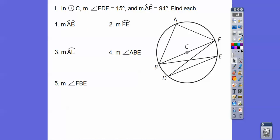Let's do the same with this one, a bunch of inscribed angles. Let's put in those numbers right there. So this angle is 15, and this arc is 94. Angle EDF is 15, and arc AF is 94. If that's 15, that's 30. If that's 94, this is going to be 47 over here. I got a diameter right there. So this is a right angle right there because it's a semicircle.